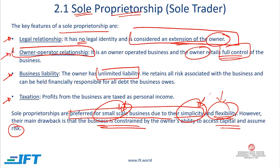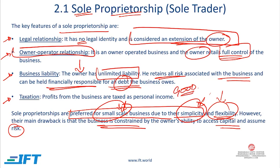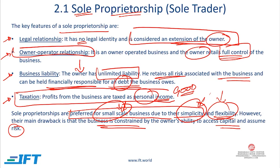Regarding liability: if it's a small business where you're there all the time, maybe you can afford to take all that risk. But if you have a big business with multiple offices across the world, you don't want to retain all the risk, because you will be financially responsible if anything goes wrong. If your business takes a loan and can't repay it, the owner has to repay it because there is no separation between the owner and the business. The only advantage that remains even when the business grows is that they are taxed only once — the business declares income, gives it to the owner, and the owner pays personal tax once.